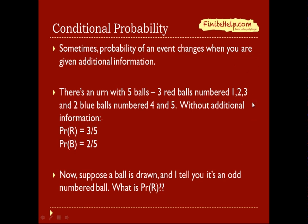There's an urn with 5 balls: 3 red balls numbered 1, 2, and 3, and 2 blue balls numbered 4 and 5. Without any additional information, we know that the probability of drawing a red is 3/5, three red out of 5 balls, and the probability of blue is 2/5.